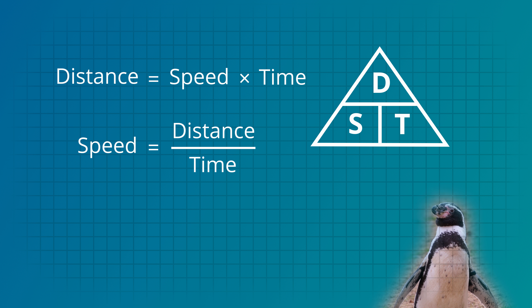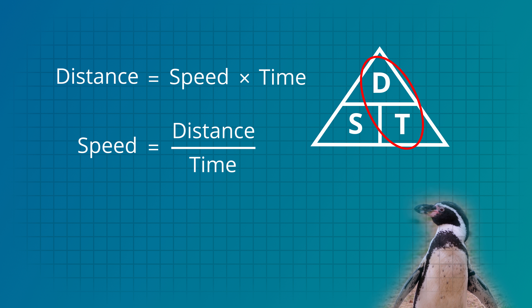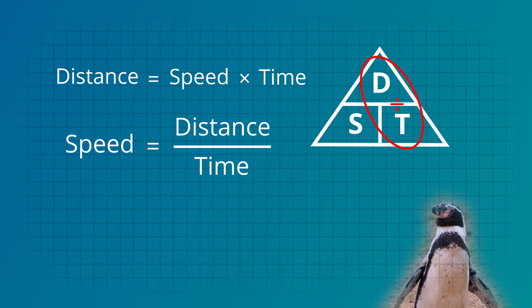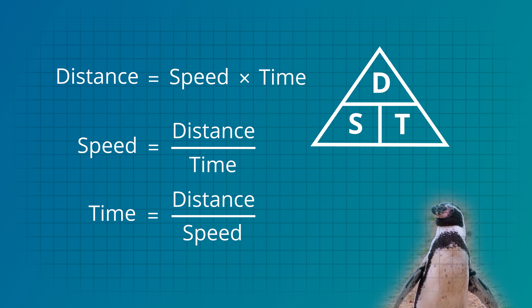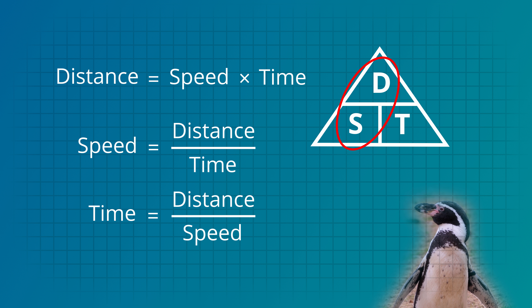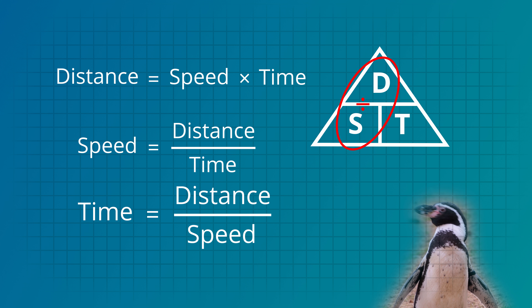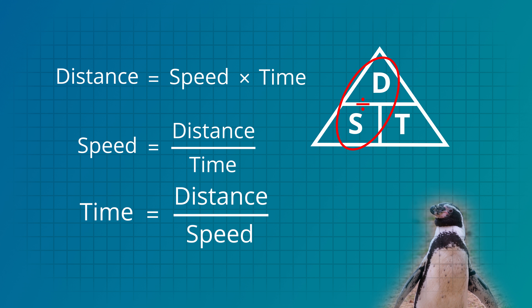Now let's use the triangle to find the speed rule. Highlight the S. Because the D is above the T we divide. Speed equals distance divided by time. Now for the third rule to find the time. Highlight the T in the triangle. Because D is above the S we'll divide. So the time equals distance divided by speed.